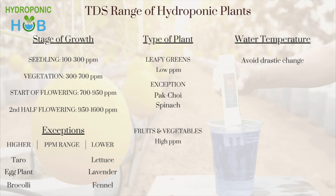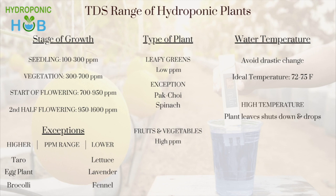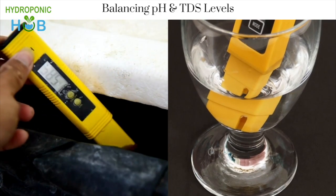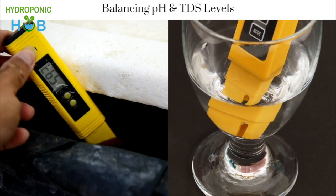Your nutrient water temperature should not drastically change. The ideal temperature for hydroponic plants is 72 to 75 degrees Fahrenheit. If the nutrient water temperature is too high, plant leaves shut down and tend to fall; if it's too low, your plants would grow slower than usual.